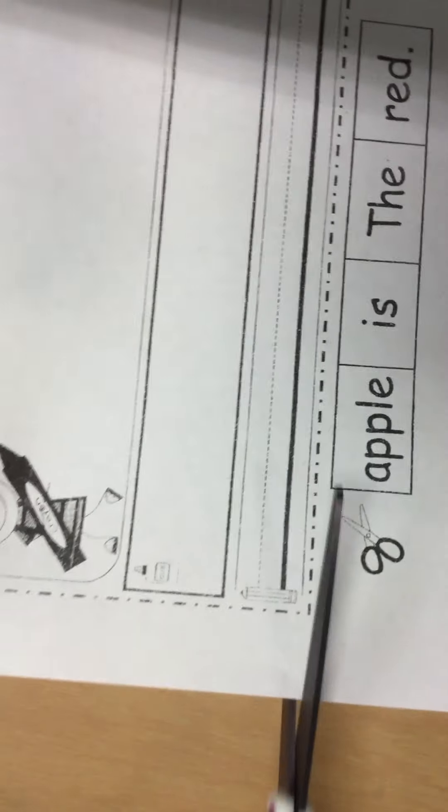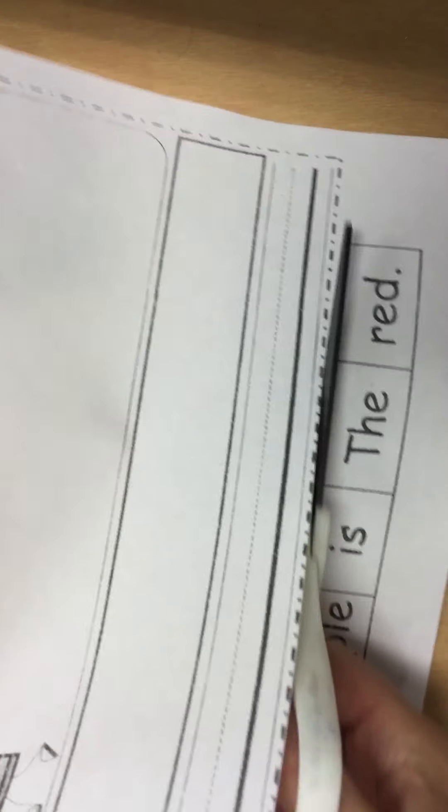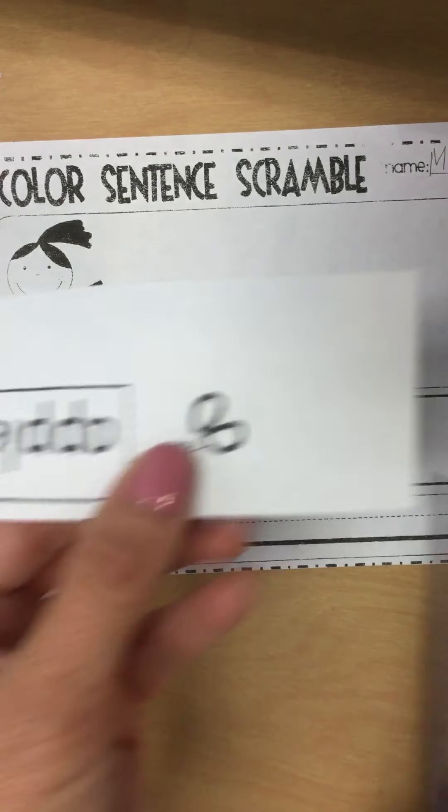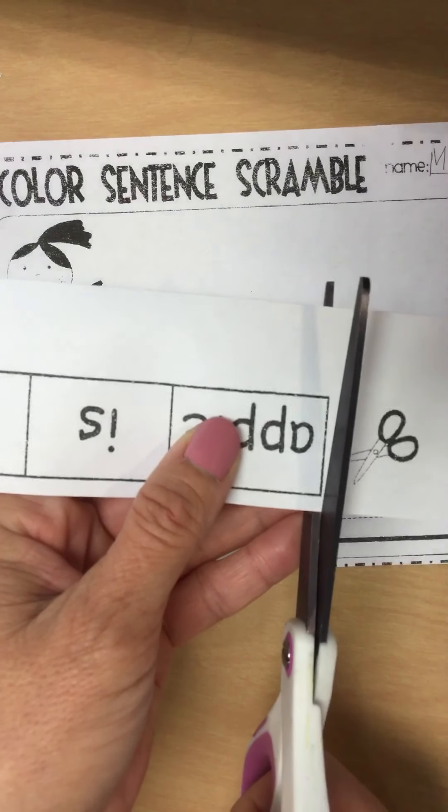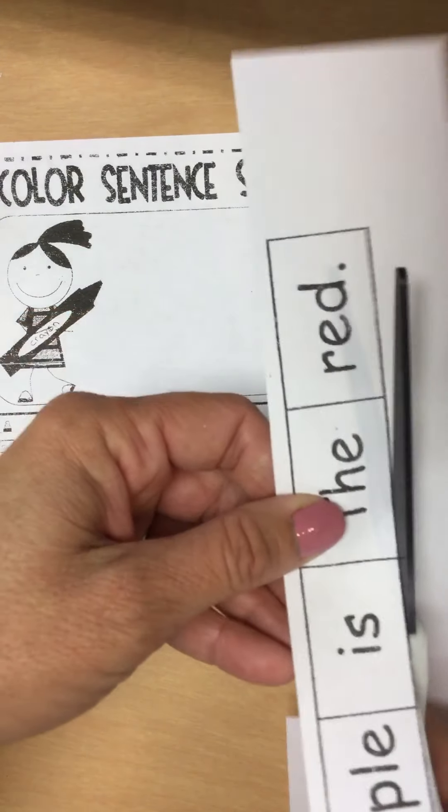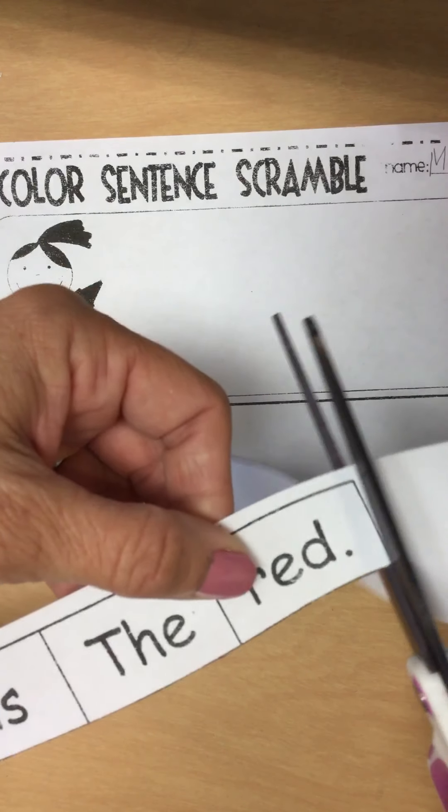And then I'm going to take my scissors and I'm going to cut straight across this dotted line so I don't have anything hanging off the end. And then I'm going to cut on these black lines all the way around.